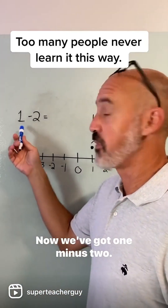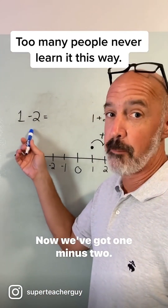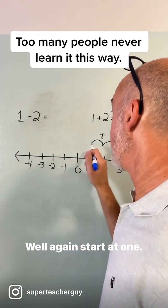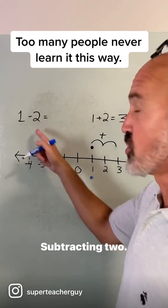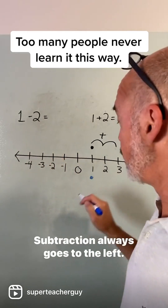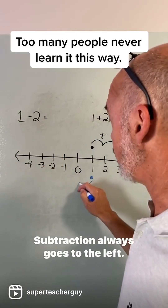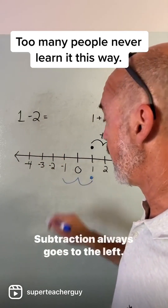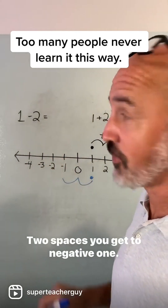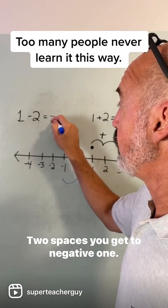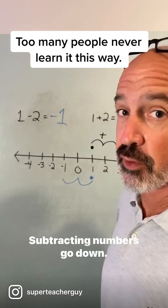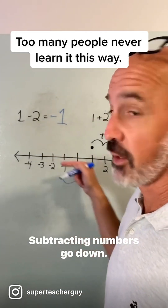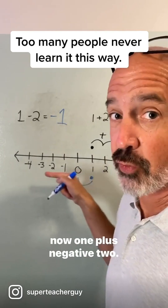Now we've got one minus two. Again, start at one. Subtracting two — subtraction always goes to the left. Two spaces, you get to negative one. Subtracting: numbers go down.